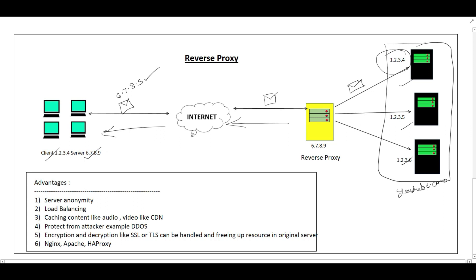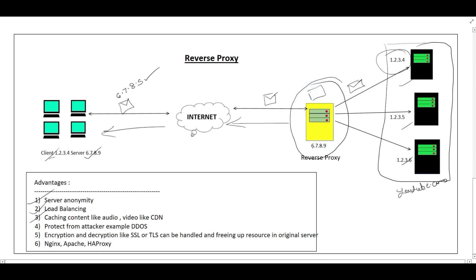In this scenario, the client does not know the actual server IP addresses — the server IPs remain anonymous to the client. The benefits of using a reverse proxy are: first, server anonymity — the client cannot know the server IP addresses. Second, load balancing — when many requests come in, the reverse proxy can distribute the load among the servers. Third, caching — we can cache static content like audio and video files. This is similar to a CDN, which is an example of a reverse proxy that caches static content.